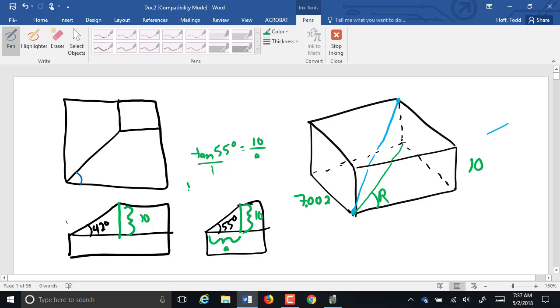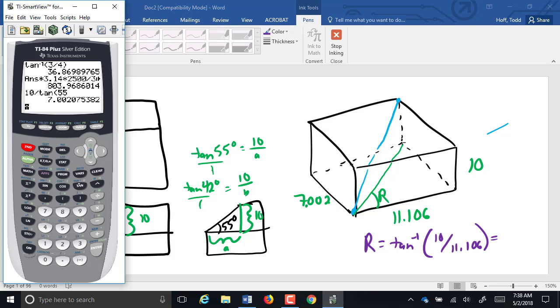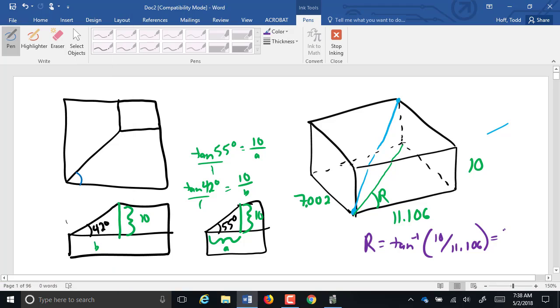This one is tangent of 42 equals 10 over B, which gives us 11.106. Now R will simply be the inverse tangent of 10 over 11.106, which equals 42 degrees.